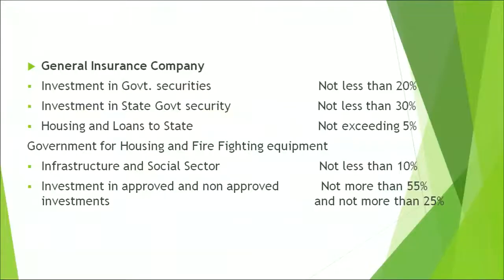When we talk about the general insurance company, there are certain limits set to the investment pattern. Investment in government securities should not be less than 20%. Investment in state government securities should not be less than 30%. Housing and loans to state government for housing and firefighting equipment should not exceed 5%. Infrastructure and social sector should not be less than 10%. Investment in approved and non-approved investment should not be more than 55% — here we have an upper cap.